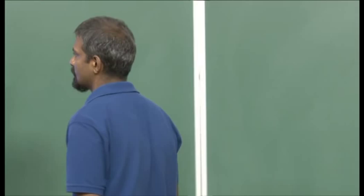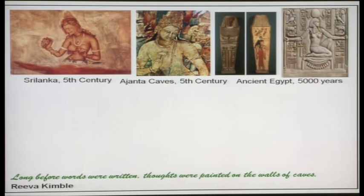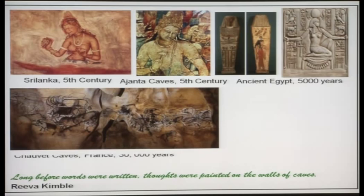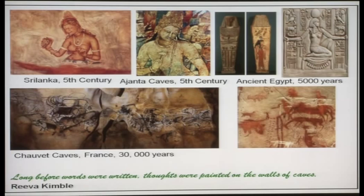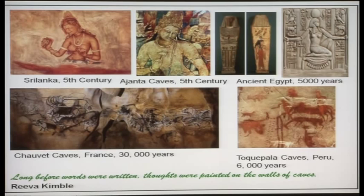Some examples, look at some paintings. So this is from Sri Lanka from the fifth century. These are paintings from ancient Egypt, 5000 years ago. Some from Chauvet caves, France, 3000 years ago and these are from Taki Pala caves, Peru about 6000 years from now. Again, look at these paintings, no text, no grammar, no language, just art, just colors. Of course, I mean the text is here, the grammar is here, on side the paintings, keep that in mind.